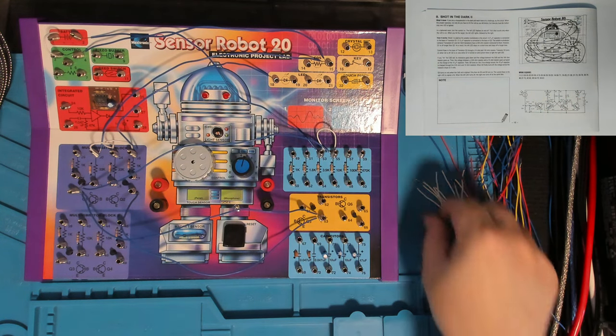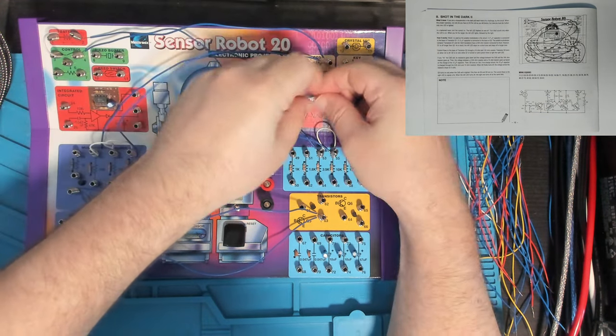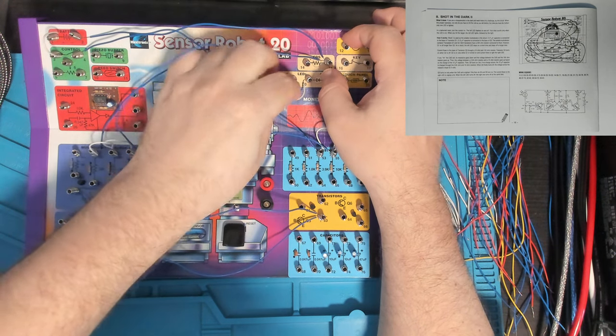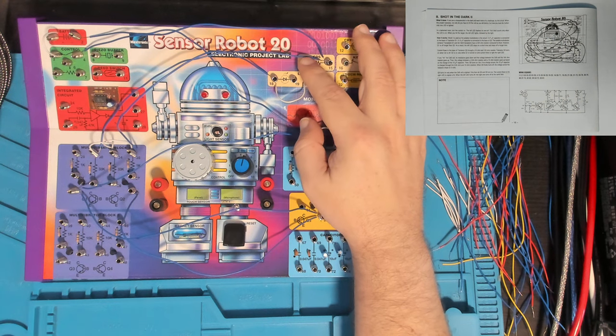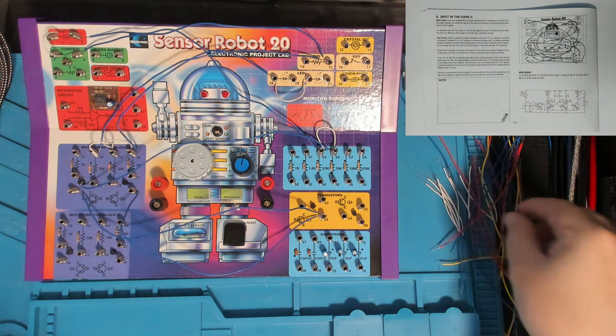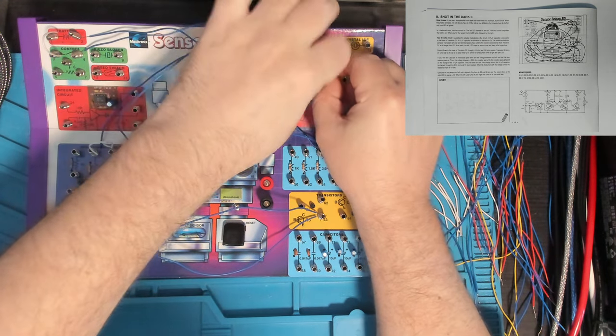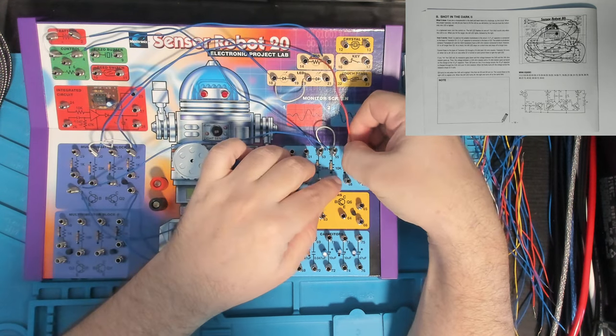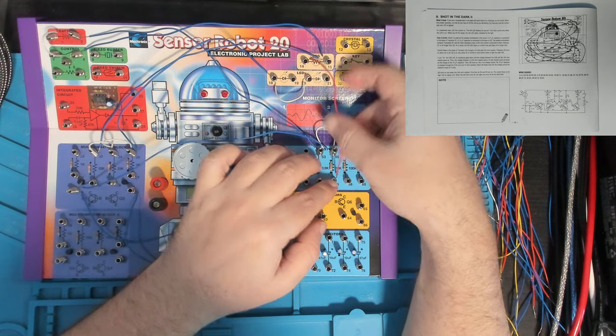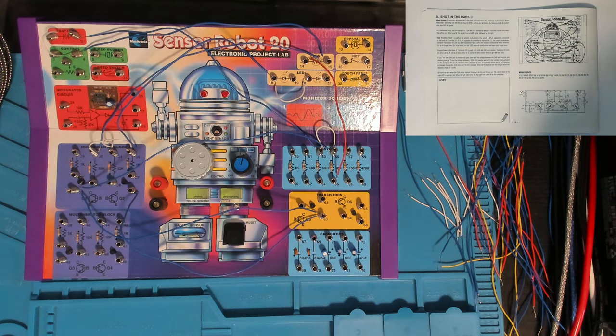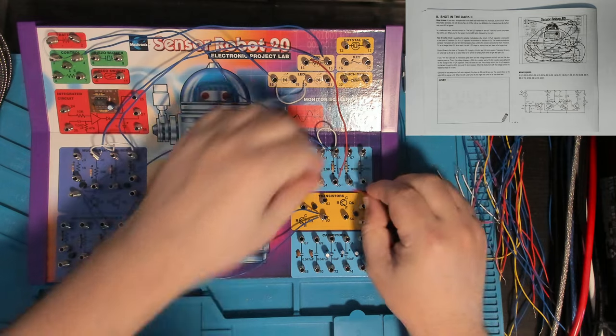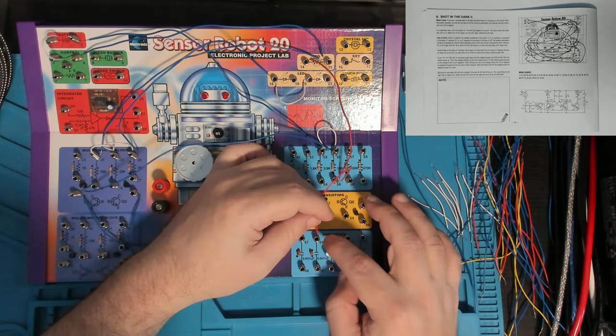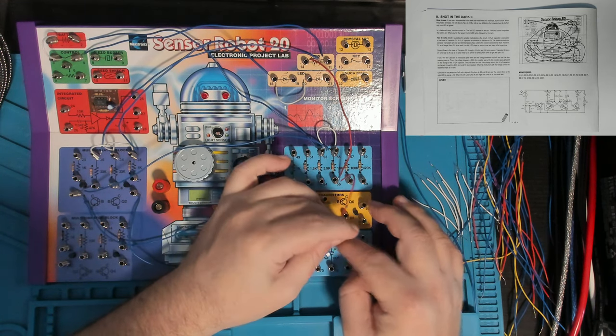And then 18 to 20. So that's just the resistor attached to the collector on Q2, connecting the cathodes of our LEDs together. And then we've got 14 to 56. So 14 is one end of our CDS cell. And 56 is down in our resistor blocks. So that's connecting the CDS cell down to our 10K resistor. And then 56 to 71. Now 71 is one of our capacitors, 10 microfarad capacitor. So that's connecting the 10K resistor through to the positive side of our 10 microfarad electrolytic capacitor.